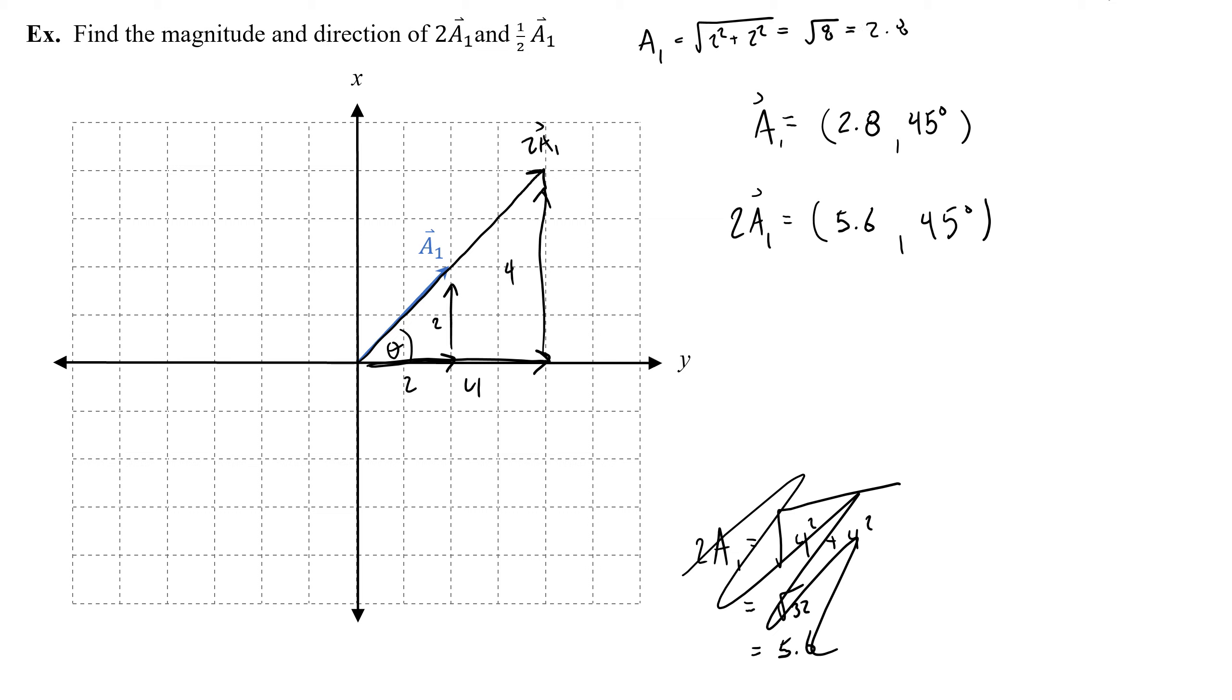So half of a1, if I get rid of all of this stuff, half of a1 would only go here. That would be one-half a1. And in that case, I would have a magnitude of half of 2.8, which is 1.4. And this was an x component of 1 and y component of 1. So if we did do the math, it would be the square root of 1 squared plus 1 squared, which is just the square root of 2, which is half of the square root of 8.